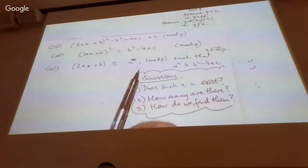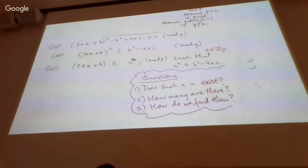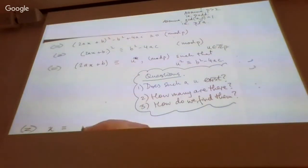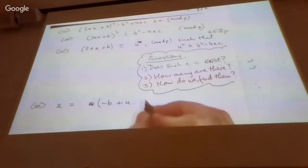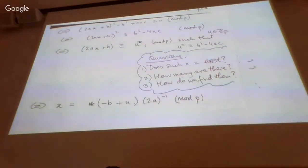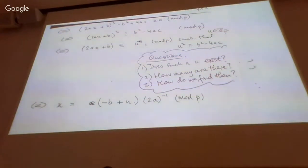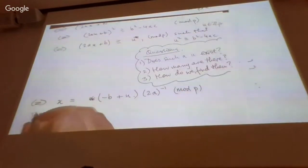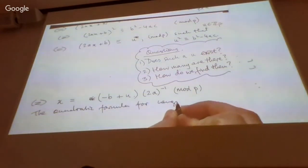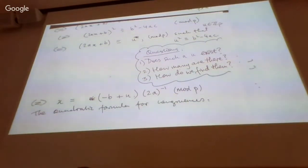Provided such a u exists, we can make the equivalent statement. Once u is known, the solution is x ≡ (−b + u) · (2a)⁻¹ (mod p) — we write the inverse of 2a rather than a fraction. Since we assumed both a and 2 are coprime to p, the inverse of 2a exists. This is the quadratic formula for congruences.